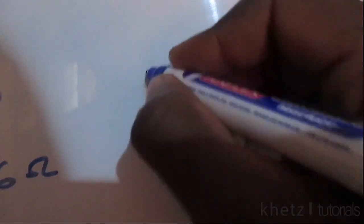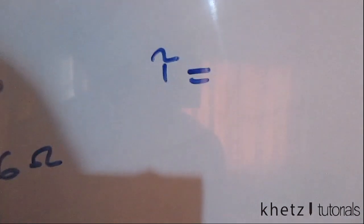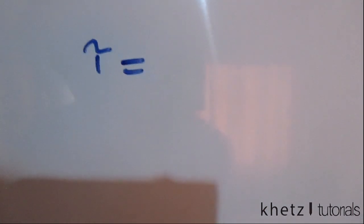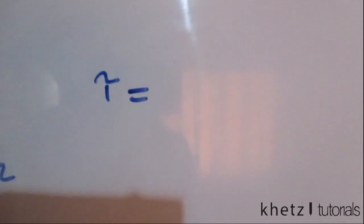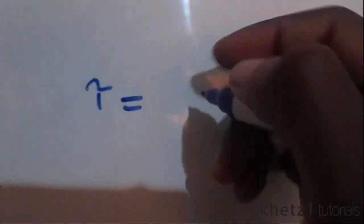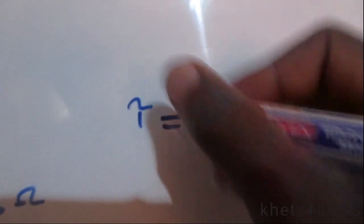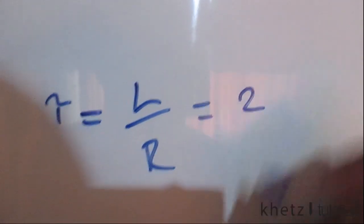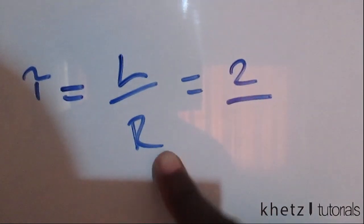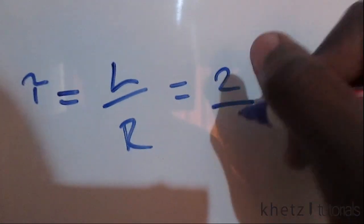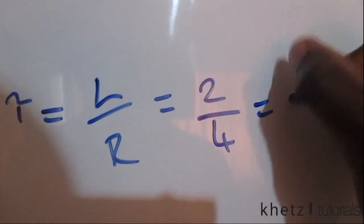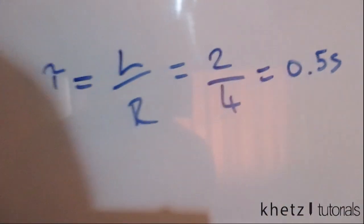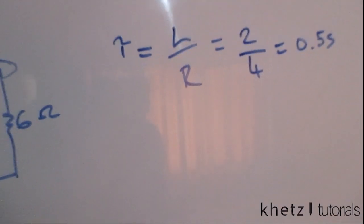Now we find the time constant. For an RL circuit, tau equals L divided by R. The inductor value given is 2 henries, and Rth is 4 ohms, so the time constant tau equals 2/4 equals 0.5 seconds.